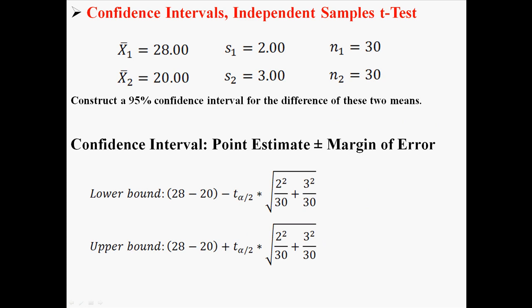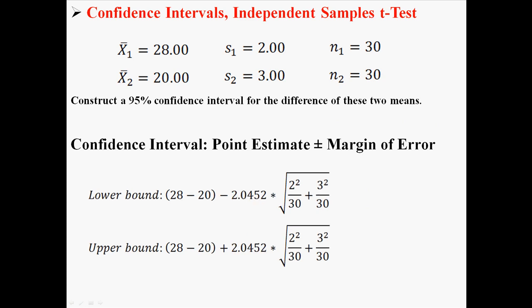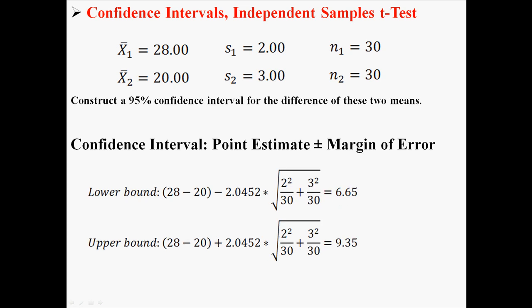So constructing a 95% confidence interval for this information, we would use a t of 2.0452. And now we have everything we need to calculate the lower and upper bounds. So if I solve for this information, I get a lower bound of 6.65 and an upper bound of 9.35.